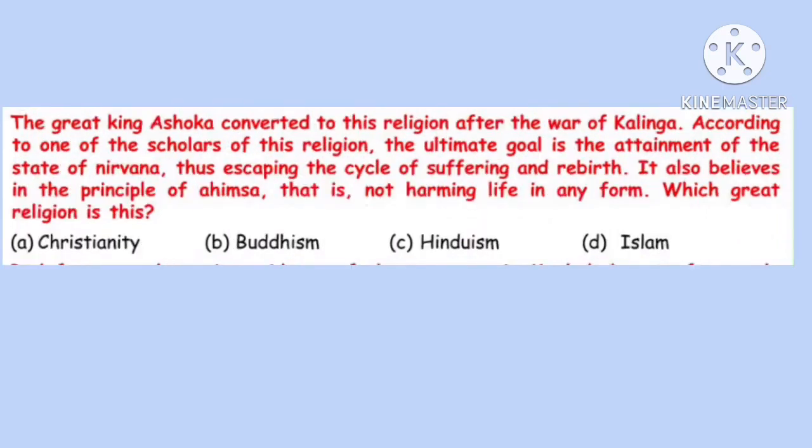Question 12. The great king Ashoka converted to this religion after the war of Kalinga. According to one of the scholars of this religion, the ultimate goal is the attainment of the state of Nirvana, thus escaping the cycle of suffering and rebirth. It also believes in the principle of Ahimsa — that is, not harming life in any form. Which great religion is this? Correct option is B: Buddhism.